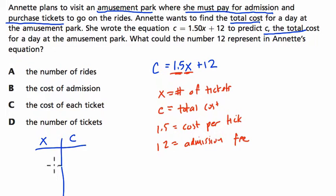X and C. So let's say we have 0, 1, and 2. If I plug in 0, it's 1.5 times 0 plus 12, and I get 12. If I plug in 1, I get 1.5 times 1 plus 12, which is $13.50.